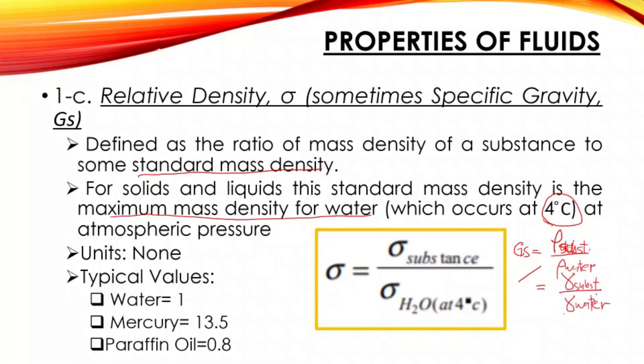Typical values: for water, 1; mercury, 13.5; paraffin oil, 0.8. That's all for number one, density. We will have our part two to introduce some of the properties of fluids. Stay tuned for part two.